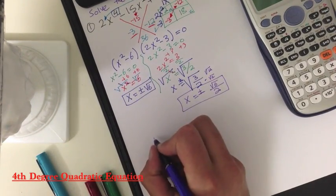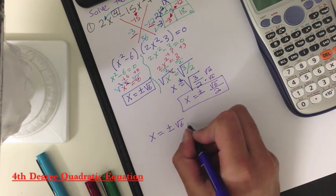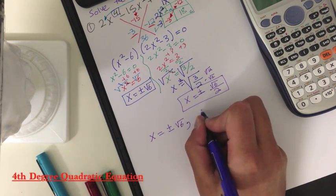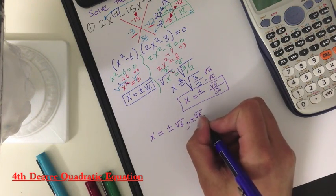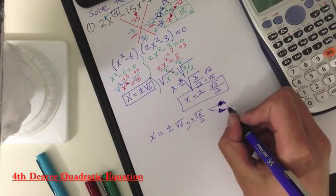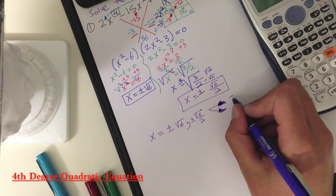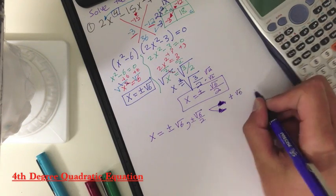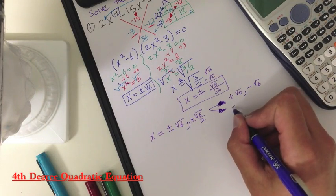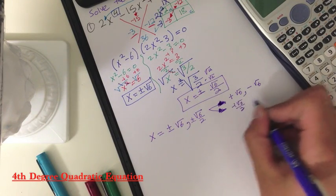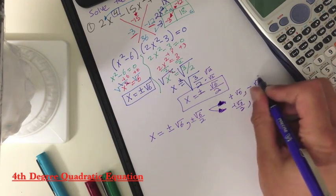So you can write it down as x equals plus or minus square root of 6, comma plus or minus square root of 6 over 2. If you want to expand both of them, you basically have right here plus square root of 6 and minus square root of 6 over 2. So these are your four answers.